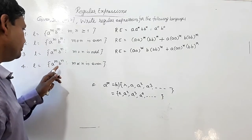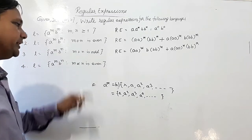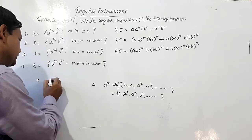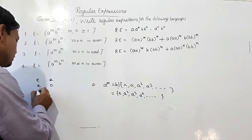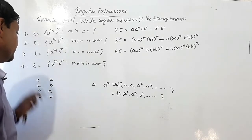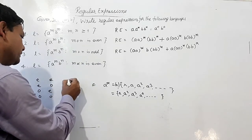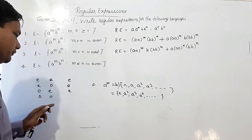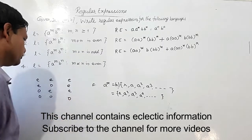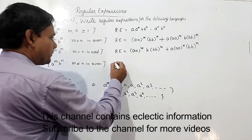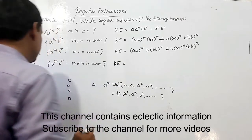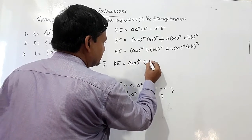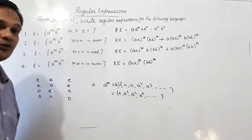Question number four: L equals a^m b^n such that m times n is even. Looking at the multiplication table: even times even is even, even times odd is even, odd times even is even, and odd times odd is odd. So three cases make the product even. If both are even, I use (aa)* concatenated with (bb)*, so the product of two even numbers is always even.